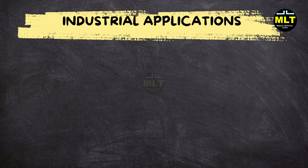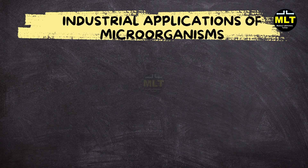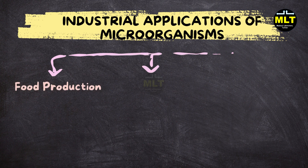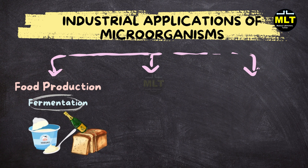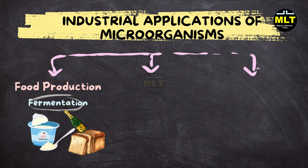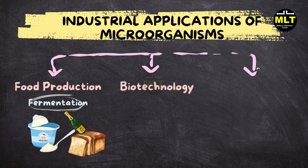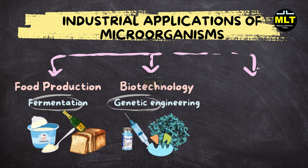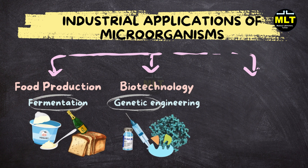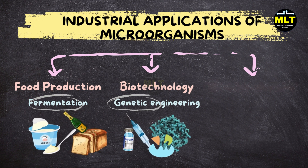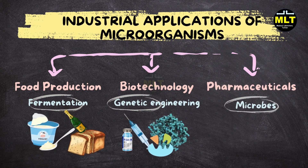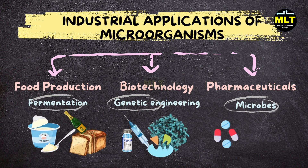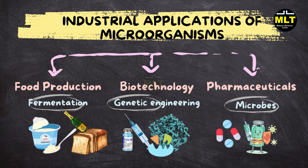Industrial applications of microorganisms. Microorganisms are essential in various industries. Food production: fermentation processes rely on microorganisms to produce yogurt, cheese, bread, and alcoholic beverages. Biotechnology: microbes are used in genetic engineering to produce insulin, enzymes, and bioremediation solutions to clean up environmental pollutants. Pharmaceuticals: fungi and bacteria contribute to the production of antibiotics, vaccines, and other therapeutic agents.